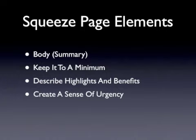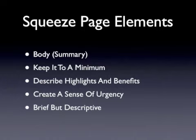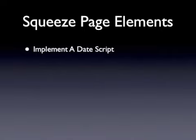You need to cut down the amount of text featured on this page, yet still highlight what you're offering and what your subscribers will receive. Ensure that your summary creates a sense of urgency and prompts your visitor to sign up before your free offer is pulled from your website. I suggest implementing a date script so that your page looks current. You could also use date scripts to feature a timeline for when the offer is available, and you can find free copy-and-paste scripts at dynamicdrive.com.